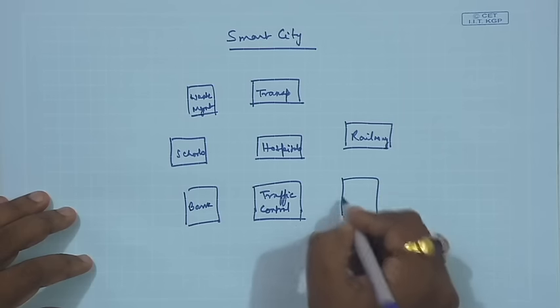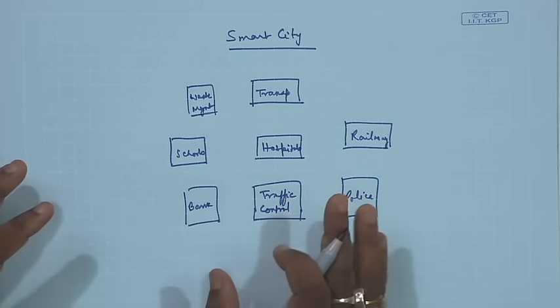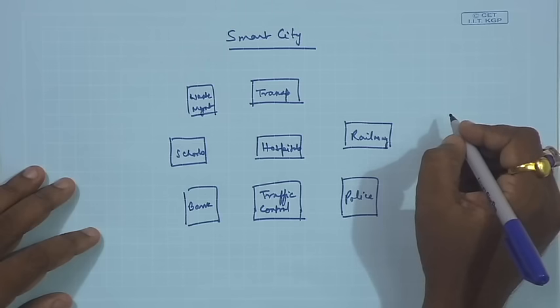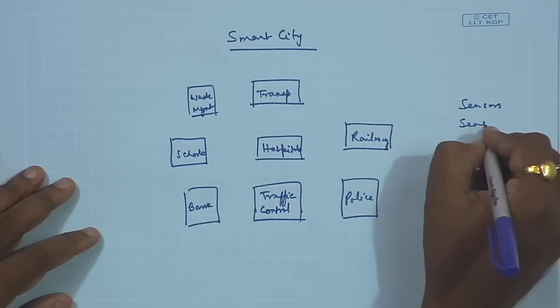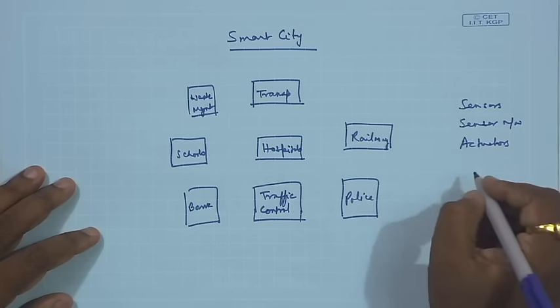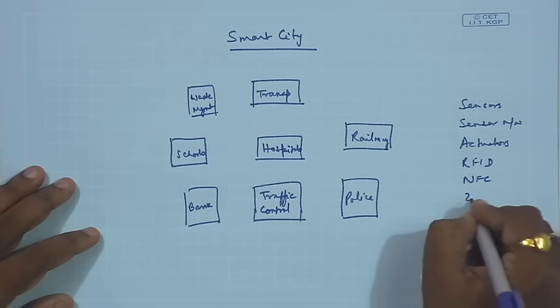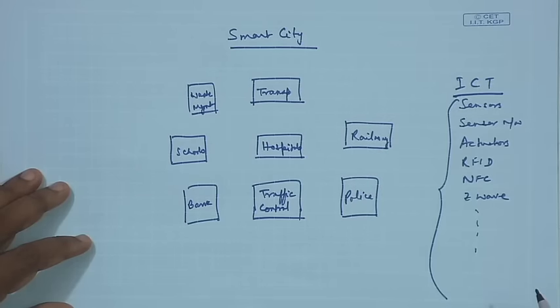One thing I have missed which is very much essential is the police. As you can see, we have to transform all of these different components of any city to be smart, for which the technologies we have studied in previous lectures will have to be taken help of — sensors, sensor networks, actuators, and different other communication technologies like RFID, NFC, Z-Wave and so on — all these will have to be used to make this transformation. These are the ICT tools that will have to be used.